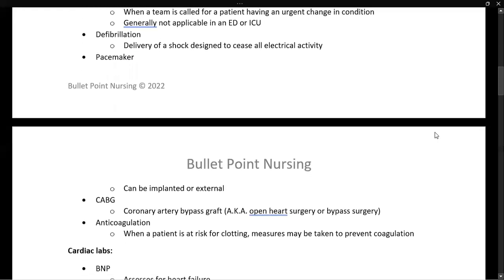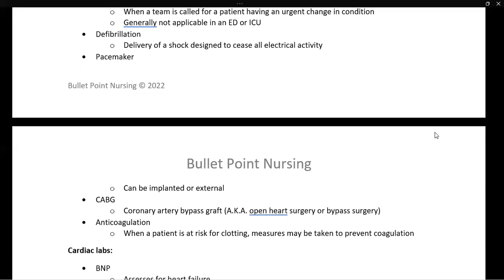A pacemaker can be implanted internally or externally and is used for a variety of conditions to be discussed in future lectures. A CABG, or coronary artery bypass graft, is surgery commonly referred to as open heart surgery or bypass surgery. Anticoagulation is when a patient is at risk for clots — we take measures to prevent coagulation, either through medication or nursing interventions such as regularly turning the patient.